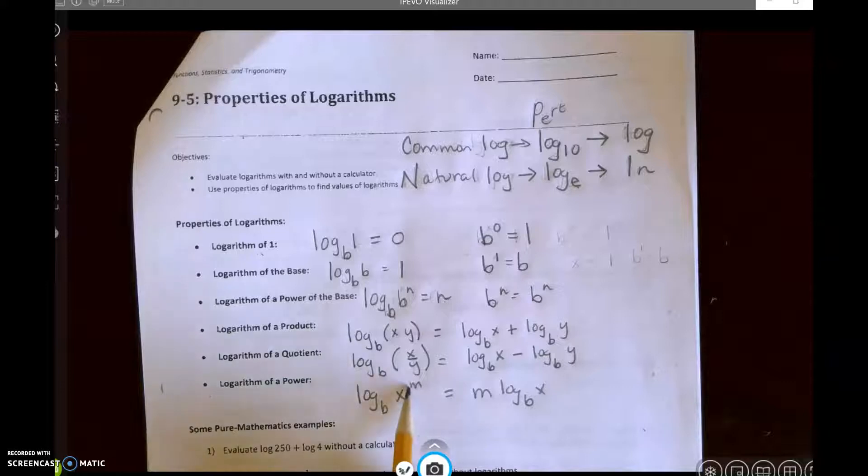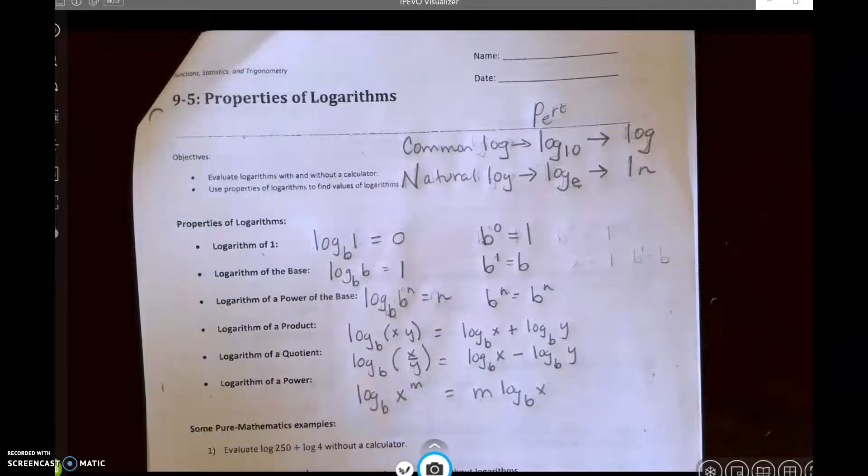So if it's written with the exponent here, then we're going to put the multiplier in front. If it's written like this, we're going to put this up here and write it in exponential form. Whichever way it's written, typically the question will ask you to write it the other way.